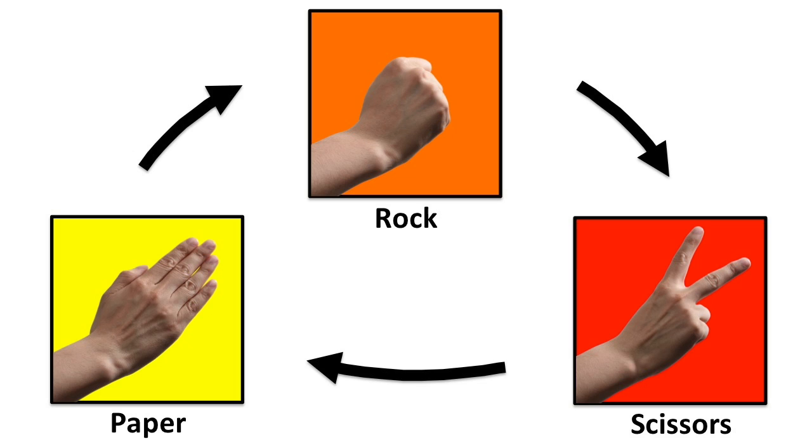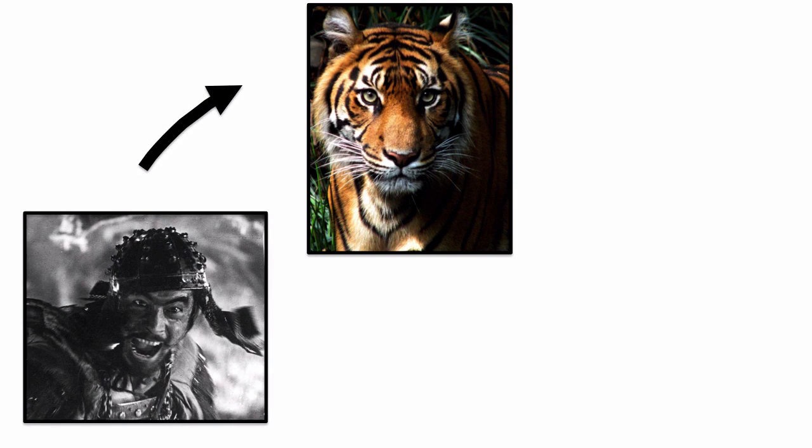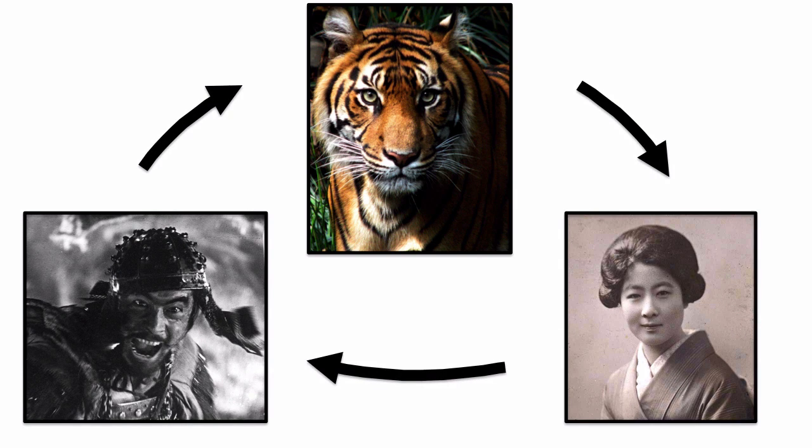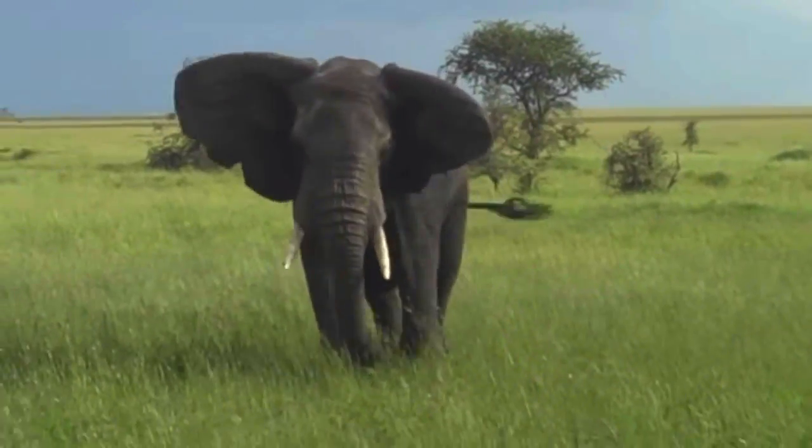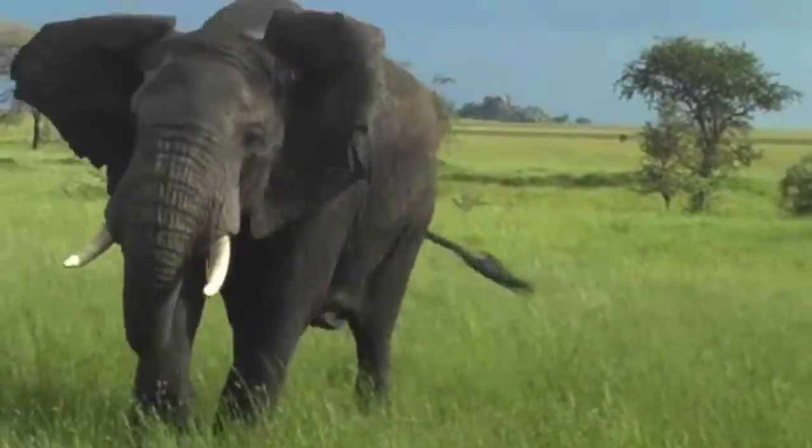In Japan, a variation has a tiger beaten by a chief while the chief is beaten by the mother of the chief. In Indonesia, a version has an elephant beating a man, the man beating an ant, and the ant beating the elephant because the ant crawls into the elephant's ear and drives it insane.